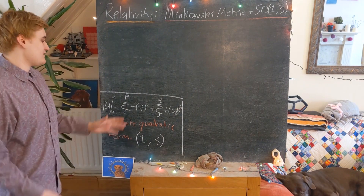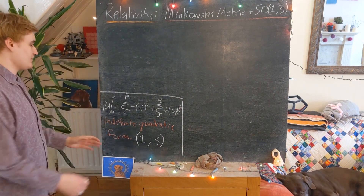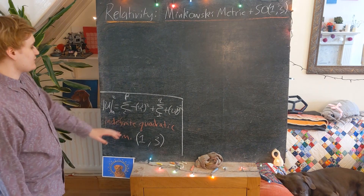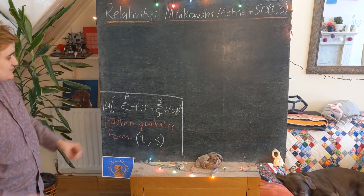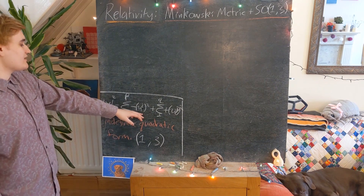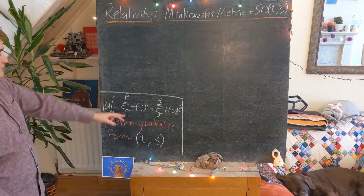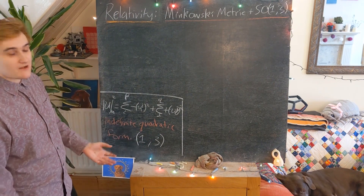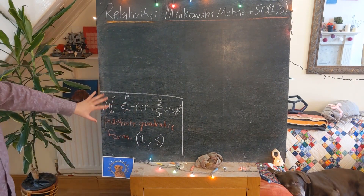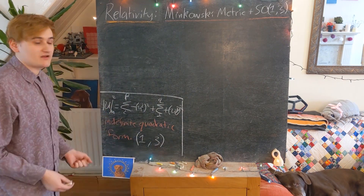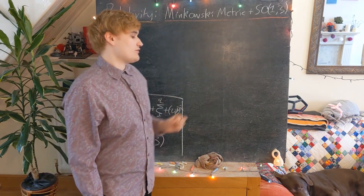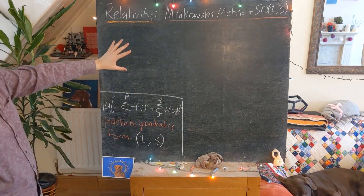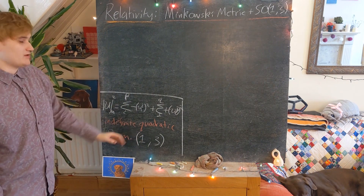That last section was introducing the idea that the Minkowski metric, or the inner product of the Minkowski metric, can be understood in terms of what we call an indefinite quadratic form. This is just taking the components and squaring them, then adding them with a relative plus or minus, and the number of pluses and minuses defines what we call the signature of the quadratic form. Now I'm going to discuss these Lie groups — the special orthogonal groups — and we're going to realize that the special orthogonal groups are the group of transformations that preserve an indefinite quadratic form.